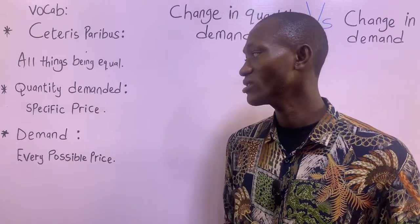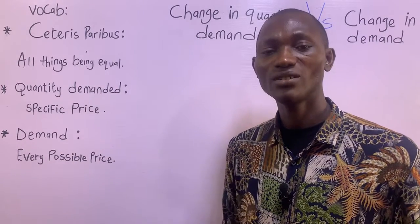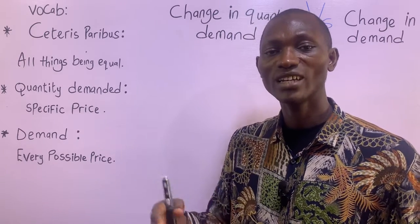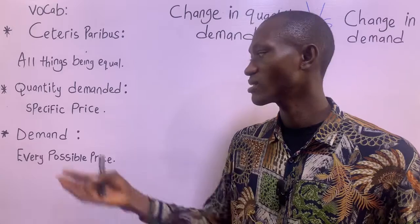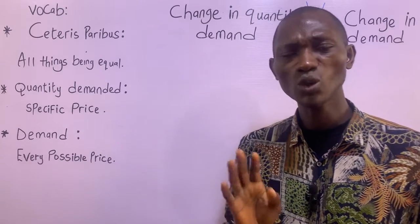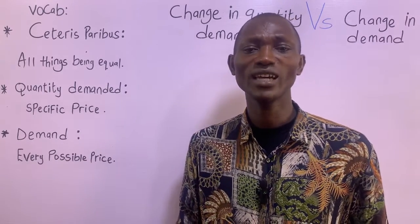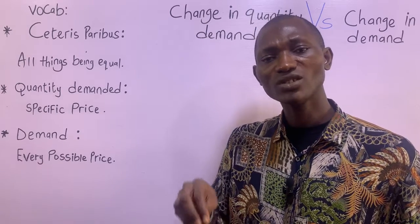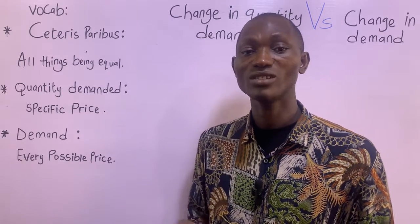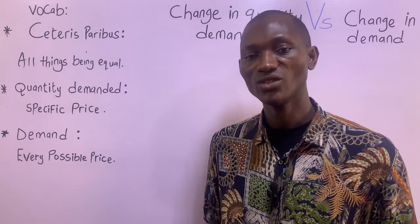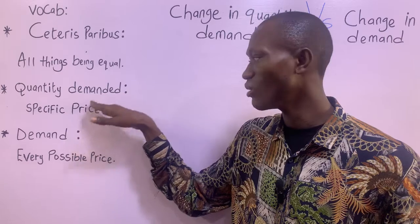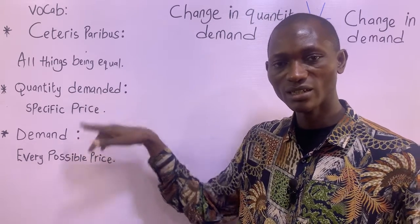Quantity demanded means the amount of a product that people are willing and able to buy at specific prices. With respect to quantity demanded, we are asking: what should be the change in the quantity demanded for a commodity when its price changes? So this is with respect to changing the price of the commodity.